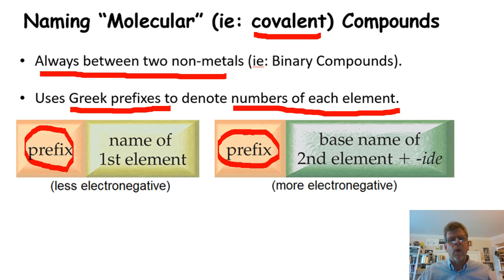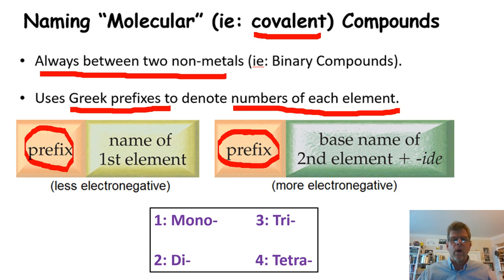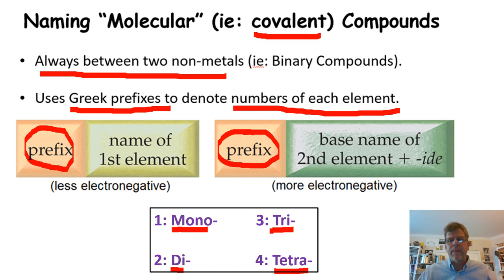Since we're working with two nonmetals, we have to distinguish which nonmetal is placed first and which is placed second. By convention, the less electronegative element is placed first and the more electronegative element placed second. We use a prefix in both cases — that prefix means how many of each element. We'll be using Greek prefixes to denote numbers: mono means one, di is two, tri is three, and tetra is four. Let's look at some examples with these prefixes and also some limitations and special exceptions.